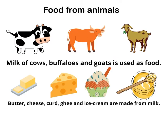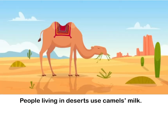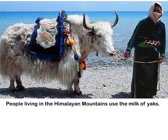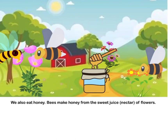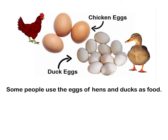Food from animals: Milk from cows, buffaloes, and goats is used as food. Butter, cheese, curd, ghee, and ice cream are made from milk. People living in deserts use camel's milk. People living in the Himalayan mountains use the milk of yaks. We also eat honey — bees make honey from the sweet juice, or nectar, of flowers.